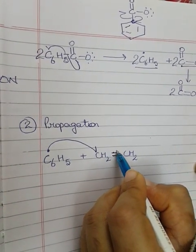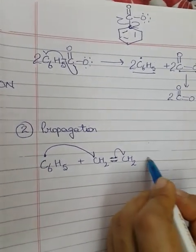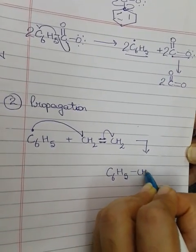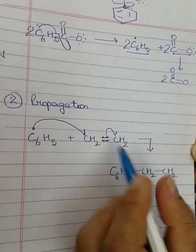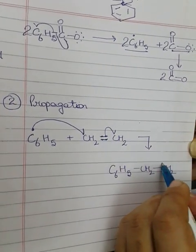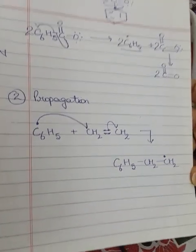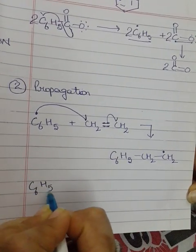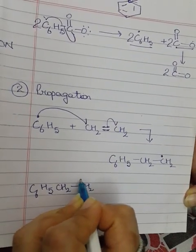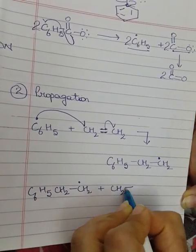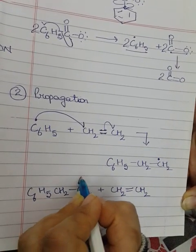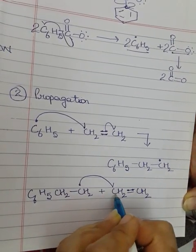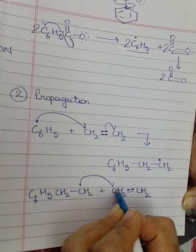Now there are double bonds, there are two bonds, each bond contains two electrons. So carbon will take this electron back and it will form bond with this carbon. One electron which will be left, it will go to another carbon. One electron, now we will get C6H5CH2CH2. Here we are getting one electron on carbon.